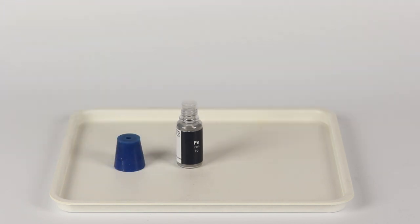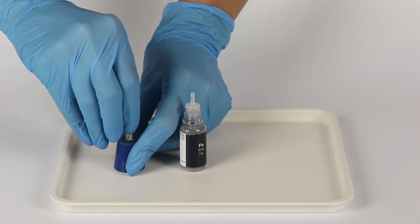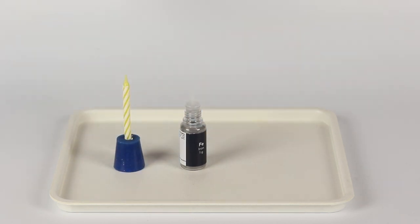Set up the candle by inserting it into the rubber stopper with one hole. Light the candle. Place the setup in the middle of the plastic tray.